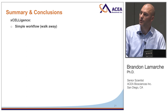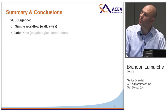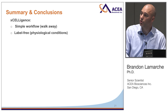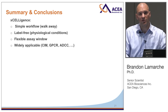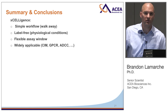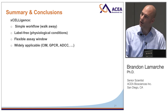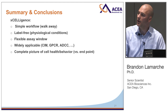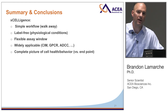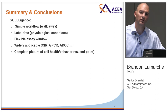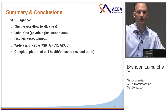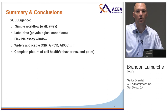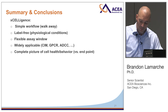Other issues with traditional assays include low sensitivity and poor signal-to-noise. With Excelligence, the workflow is extremely simple, it's label-free, the assay window is very flexible, and applications are wide — from cell invasion and migration to GPCR stimulation or drug screening. It gives you a complete picture of cell health and behavior because you're looking at a real-time trace, not trying to surmise what took place between two endpoints simply represented in a bar plot.